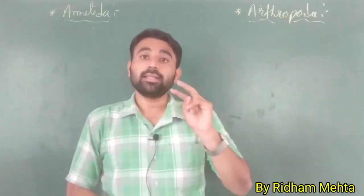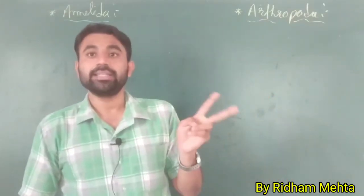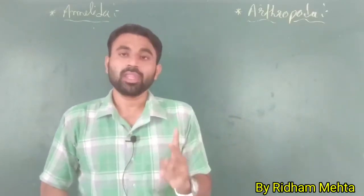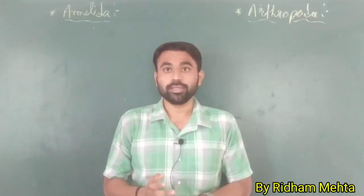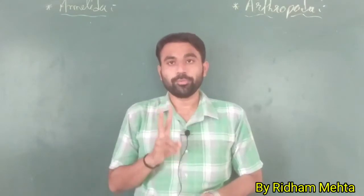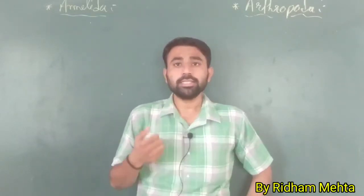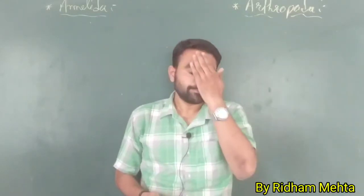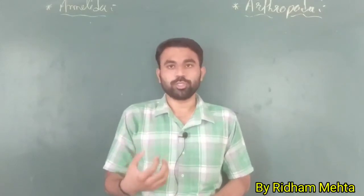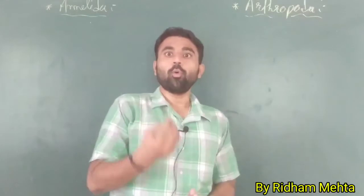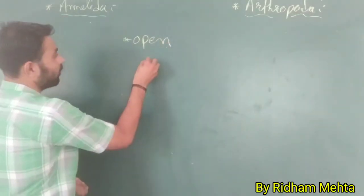There are two terms related to the circulatory system: open type and closed type. Both Annelida and Arthropoda are true coelomate animals, meaning they have a true body cavity. In the open type of circulatory system, the blood vessels open into the body cavity. This is shown in a symbolic diagram with a heart and blood vessels.